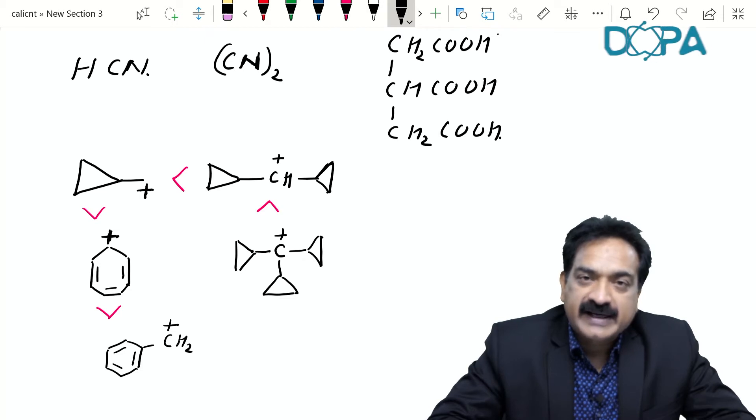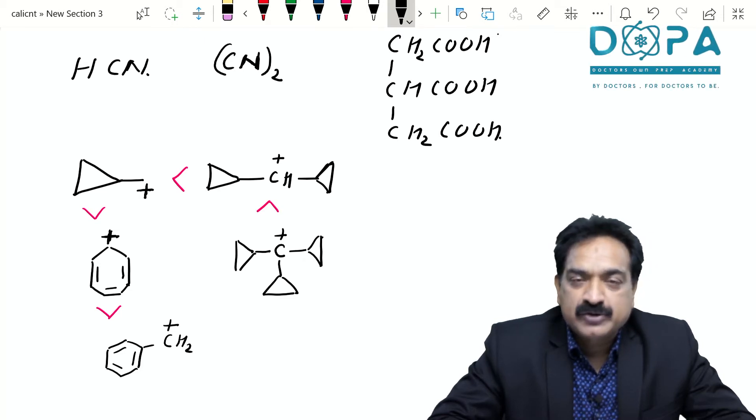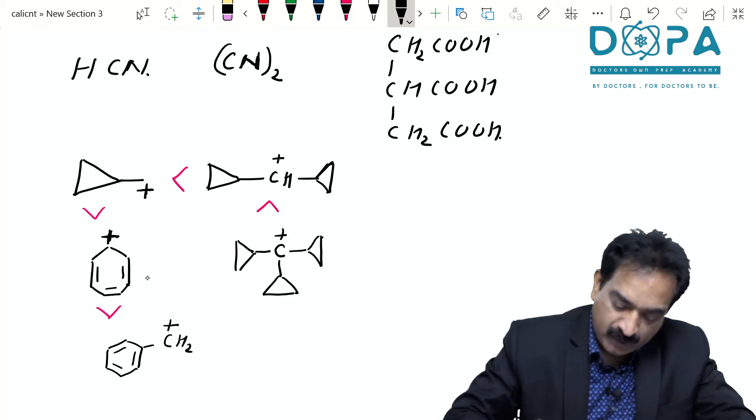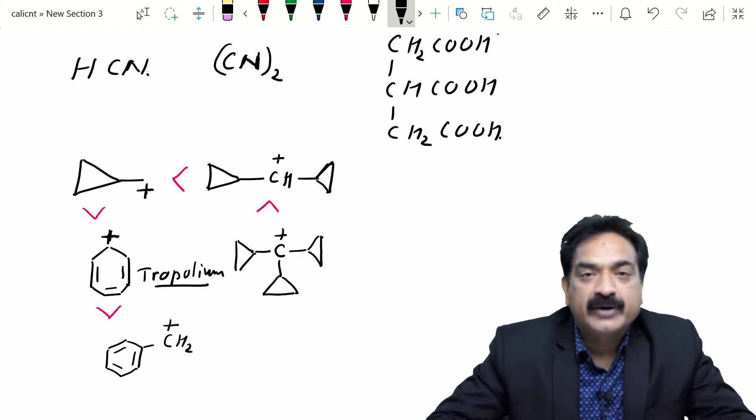If you decrease the cyclopropyl group, the stability goes on decreasing. Even cyclopropyl methyl carbocation is more stable than tropolium, and this tropolium is more stable than benzyl carbocation because tropolium has inbuilt aromaticity.